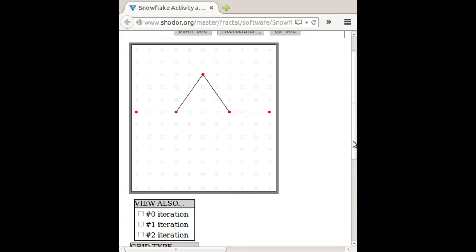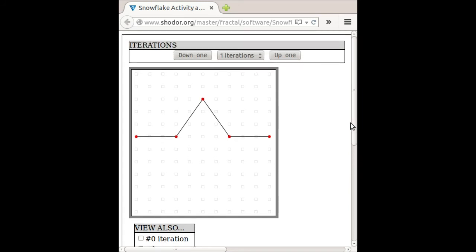So what I've done is I've created that shape, that sort of generator, that bent line shape that's at the core of the Koch curve construction.